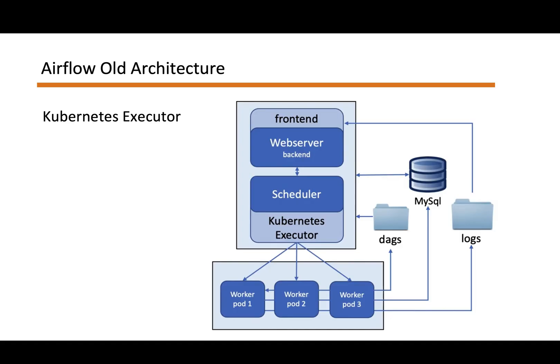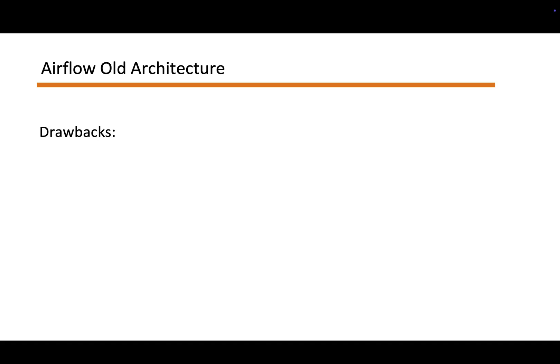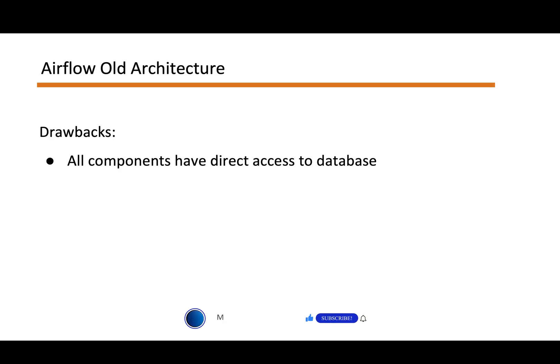From all of these four executor architectures, you can see something in common, which we are going to talk about while discussing the drawbacks. One thing you have observed is that all of the components have direct access to the database, which means the tasks and the workers have access to the metadata database directly, which brings the security risk of accidental and malicious writes. Database credentials are exposed to multiple components.